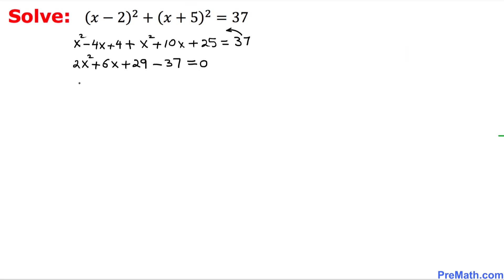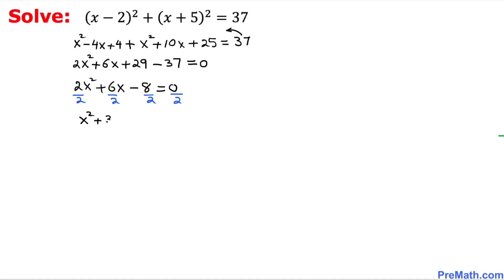So we simplify to get 2x squared plus 6x minus 8 equals 0. We can see that this quadratic equation is easily divisible by 2 across the board, so dividing each term by 2 gives us x squared plus 3x minus 4 equals 0.